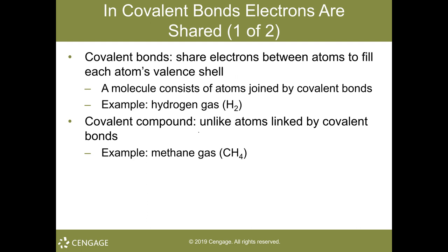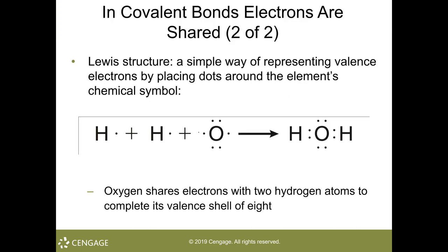Looking at carbon in this example bonding with hydrogen to make methane gas: carbon has four valence electrons, and four plus four equals eight — that is why we have methane gas by way of those covalent bonds from each of those individual hydrogen atoms. Similarly, water is formed because oxygen has six valence shell electrons and those two hydrogens each have one, so six plus two equals eight. Water is indeed a covalent molecule.